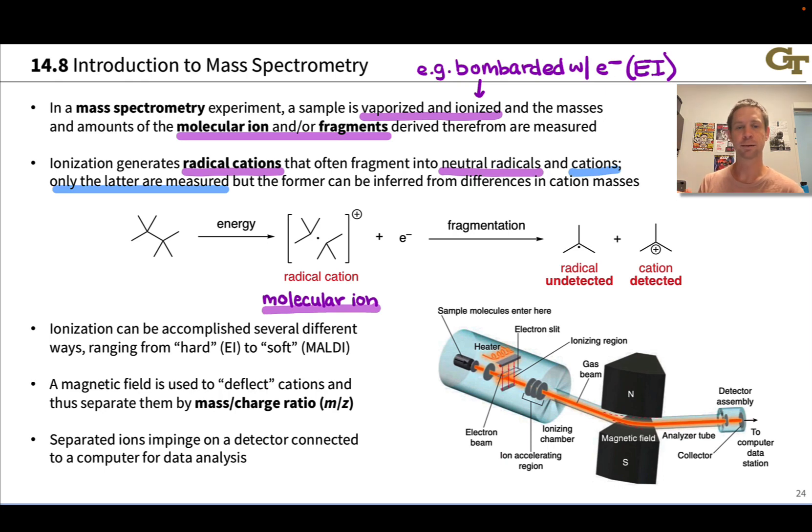Fragmentation of this can produce the tert-butyl radical which is neutral and goes undetected, and the tert-butyl cation which is detected. This mass is going to show up in the mass spectrum output of the experiment.